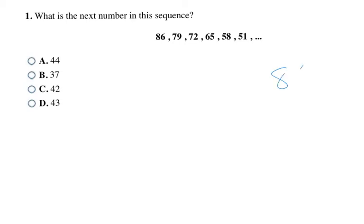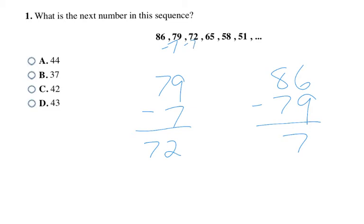If I take 86 minus 79, that equals 7, so that's a minus 7 rule there. I'm going to see if that same thing applies. If I take 79 minus 7, that gets me 72. If I take 72 minus 7, that gets me 65. You can keep checking it: 65 minus 7 is 58, 58 minus 7 is 51. So the minus 7 is going to be my pattern.